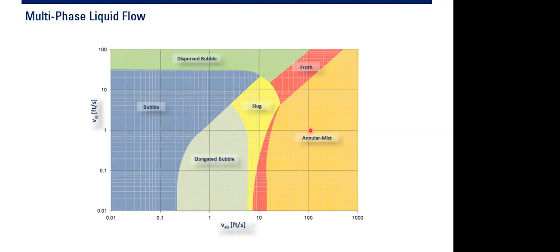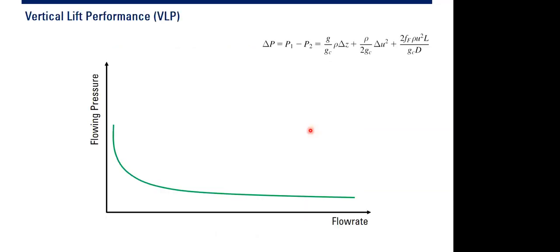To distinguish the flow regime, we use a flow regime map. To construct this map, we obtain the superficial gas velocity on the horizontal axis and the superficial liquid velocity on the vertical axis. The zones include bubble flow, dispersed bubble flow, elongated bubble flow, slug flow, froth flow, and annular flow. The flow regime will influence wellbore performance, which is why we need to understand at least the basics of flow regimes. The final curve representing well performance is called the vertical lift performance (VLP).